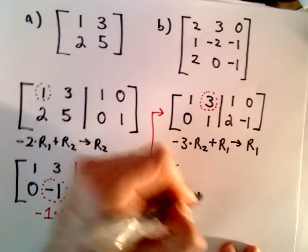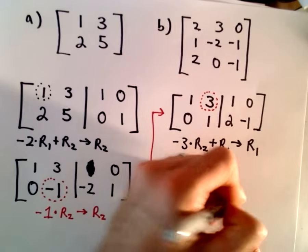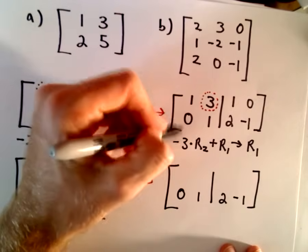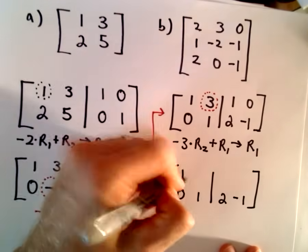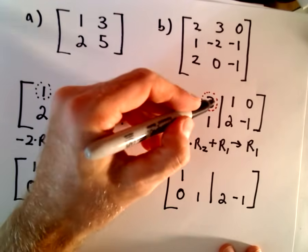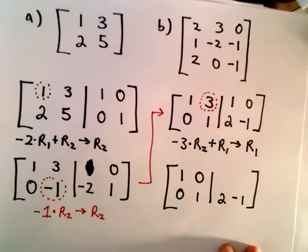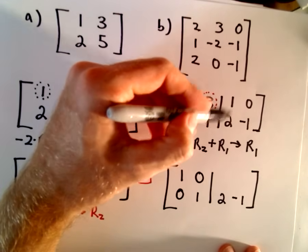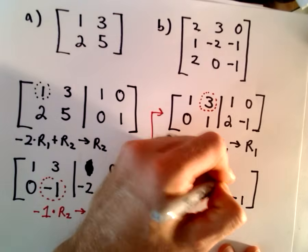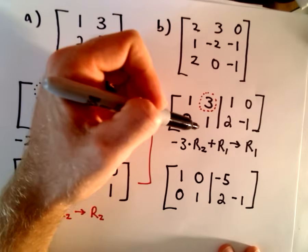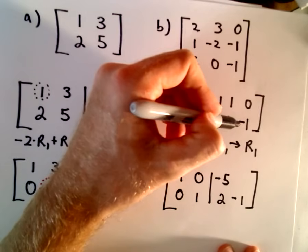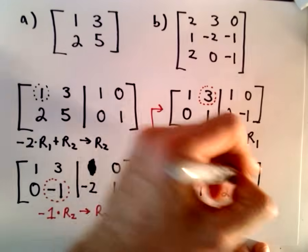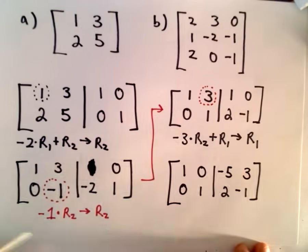So, I'm going to go ahead and write down the second row since I'm not changing it. Okay, so negative 3 times 0 plus 1 is 1. Negative 3 times 1 plus 3 will give us 0. And, again, that's what we wanted. Negative 3 times 2 is negative 6. Negative 6 plus 1 will be negative 5. And then, last but not least, negative 3 times negative 1 is going to be positive 3. And positive 3 plus 0 will still be positive 3.